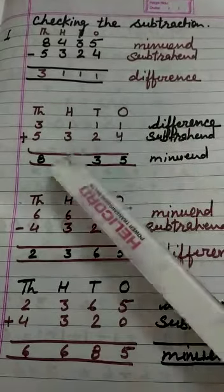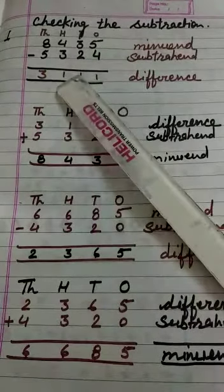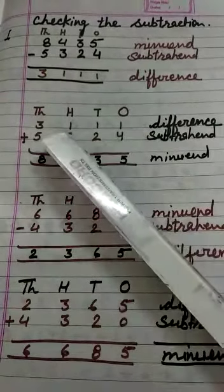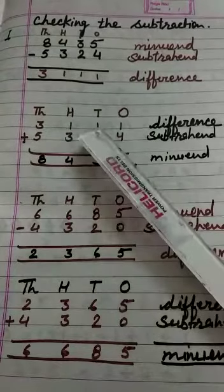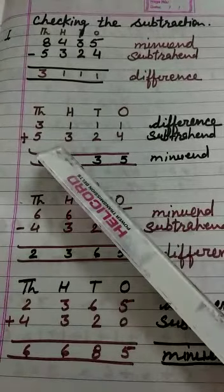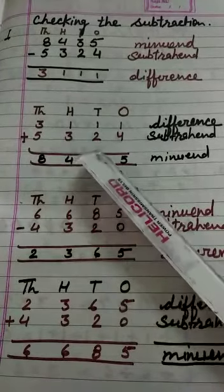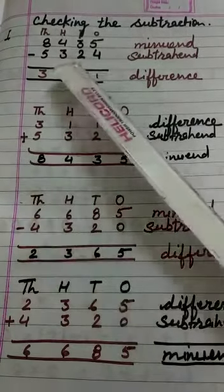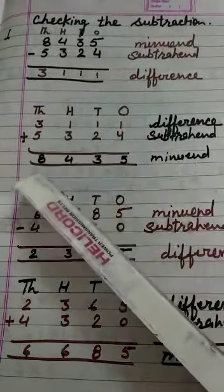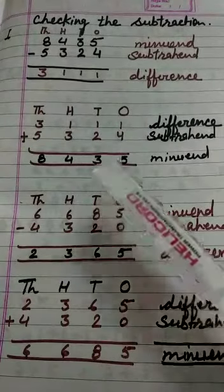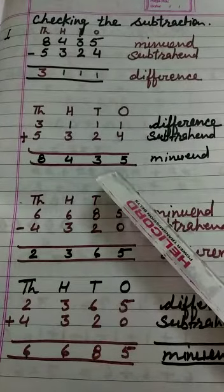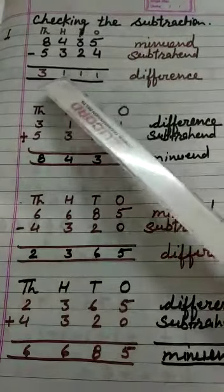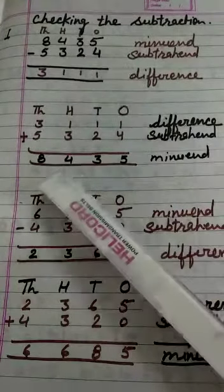Now, it's time to check the answer. So first, we will write the difference number. Then we will add the subtrahend, or the smaller number. If we get the larger number as an answer, then we understand the answer of the subtraction is correct.